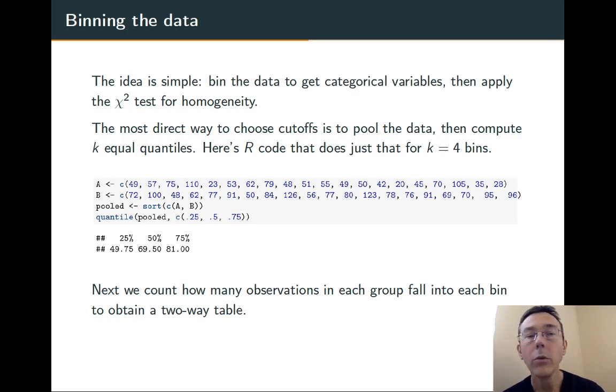The most direct approach is to pool all the data, giving us a total sample size of 40, then compute k equal quantiles where k is the number of bins. For four bins, we want the first quartile, second quartile, third quartile, and fourth quartile.